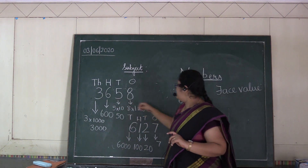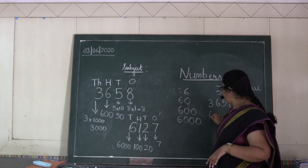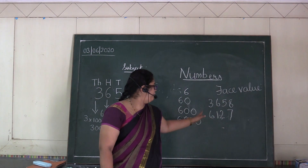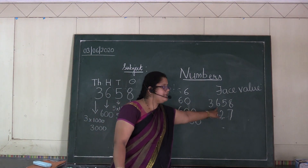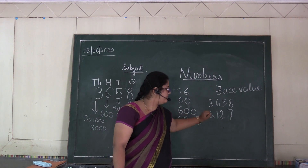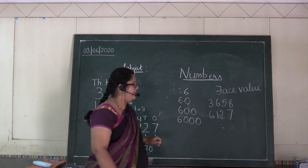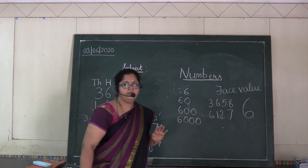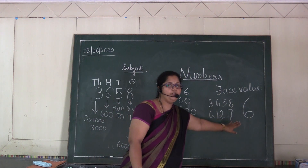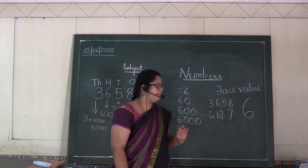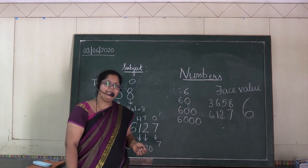Let's take the same examples: three thousand six hundred and fifty-eight, and six thousand one hundred and twenty-seven. Six is repeating. The place value of six in three thousand six hundred fifty-eight is six hundred, and in six thousand one hundred twenty-seven it is six thousand. So the place value will change, but the face value will be six only — whichever place it is in, one's, ten's, hundreds, or thousands. The face value will not change.